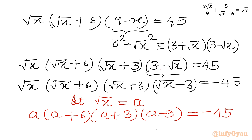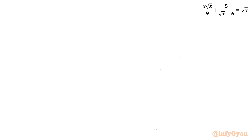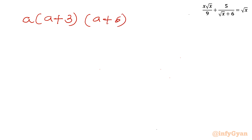Now I will consider the two brackets a and (a plus 3) all together, and (a plus 6) and (a minus 3) all together. So: a(a plus 3) times (a plus 6)(a minus 3) equal to negative 45.